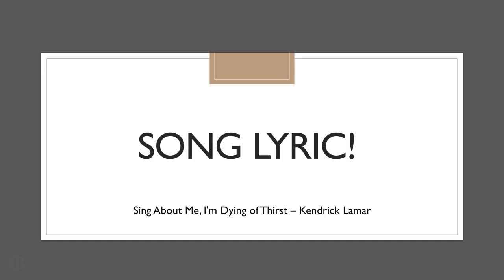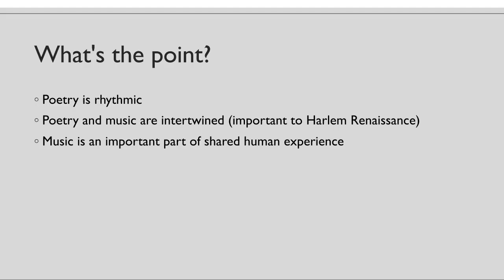Hip-hop is actually incredibly poetic and uses a lot of really creative rhyme schemes and meter schemes — but we're not going to get into that today. So what's the point of this activity? Poetry is rhythmic, and because rhythm is such an important part of poetry, poetry and music are intertwined. They have very similar roots. This is important to the Harlem Renaissance because jazz strongly influenced poetry — partly with its rhythms, largely in its themes of black experience and black artistry, and also because it was highly improvisational, which led to more avant-garde improvisational poetry. Music is a commonality across all human cultures, and because of that, poetry is tied up in that — that's why humans are so drawn to music and poetry.